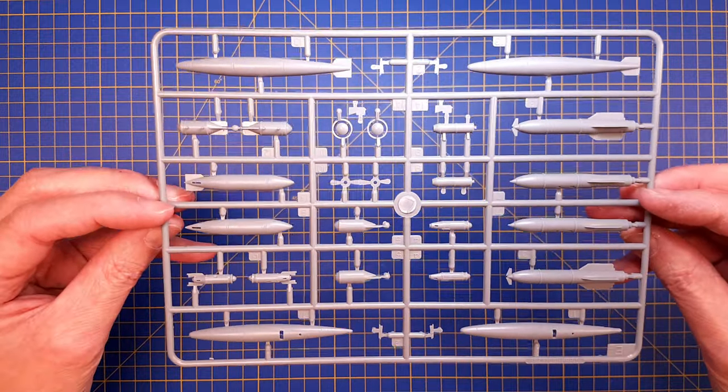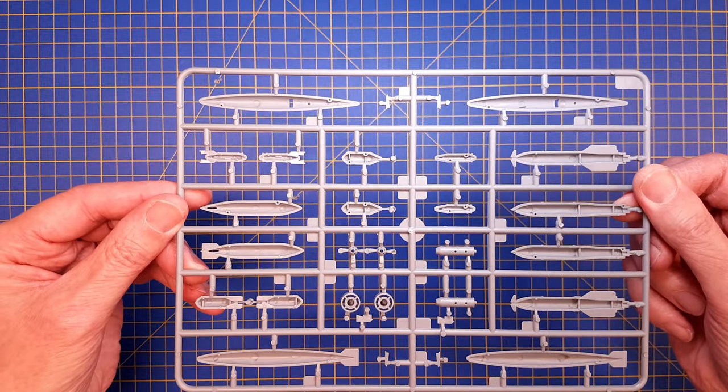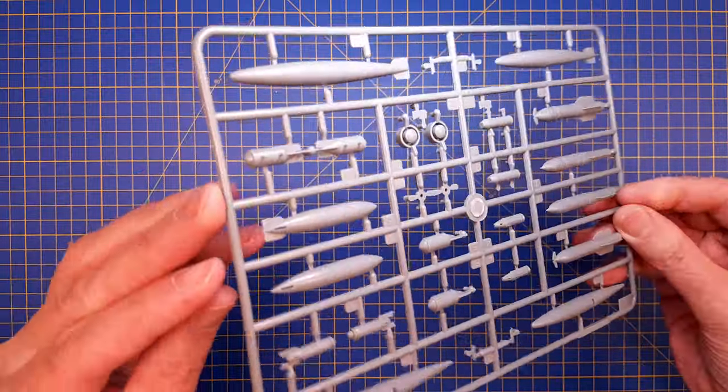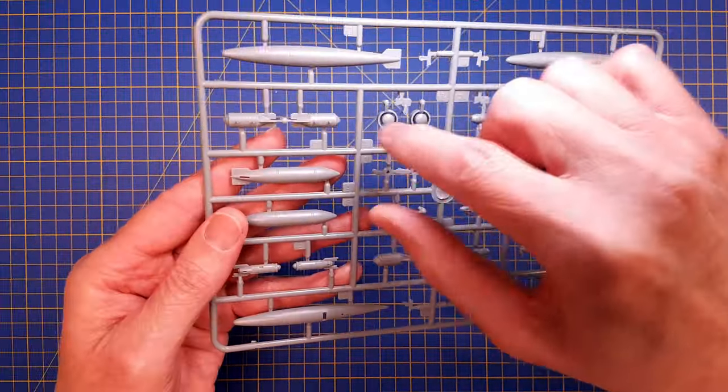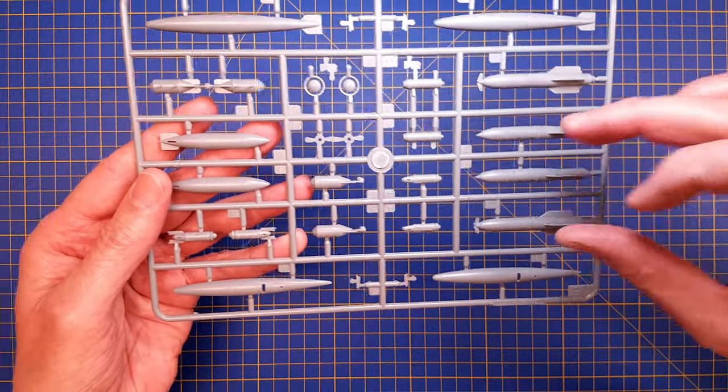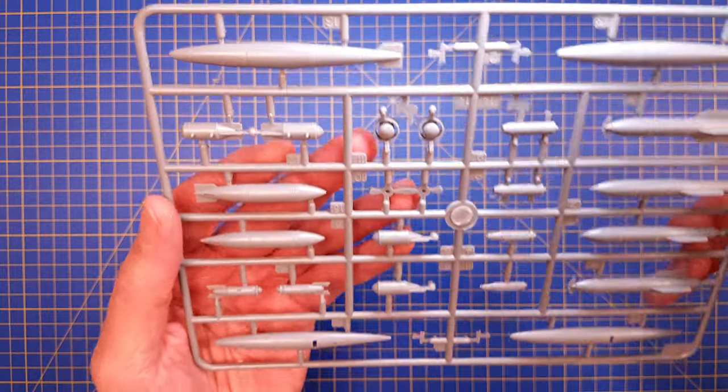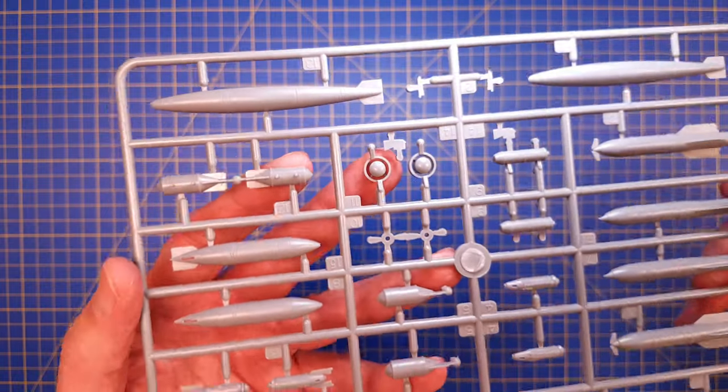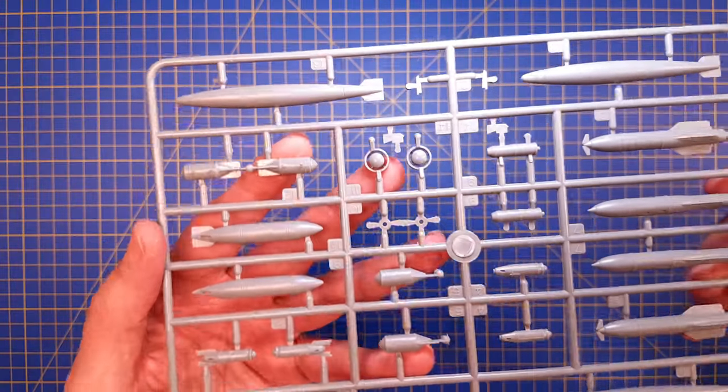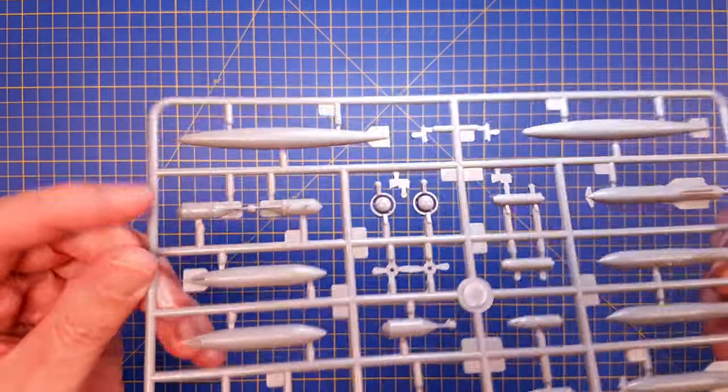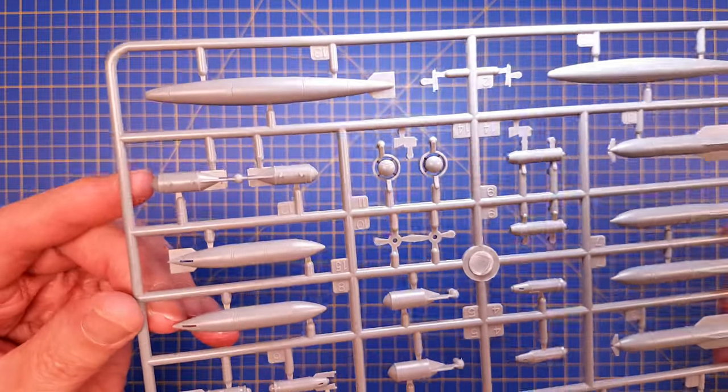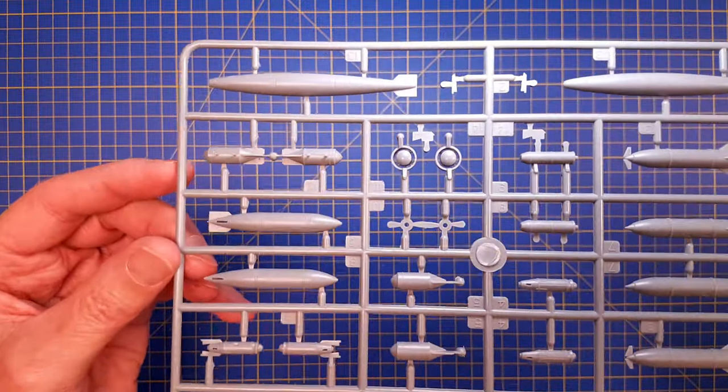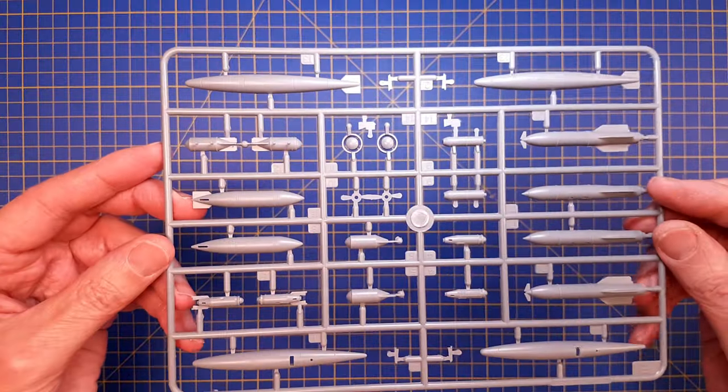I really like that they have divided the torpedo into two different segments so you can get all the details. I wonder how they paint that - if you paint it as a separate part and then put it together, or if you mask it. We will have to sort that out when we start building this.